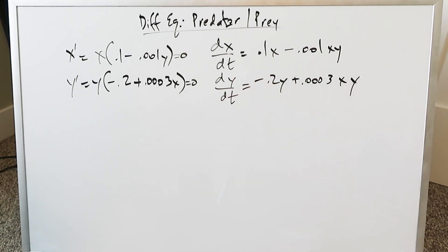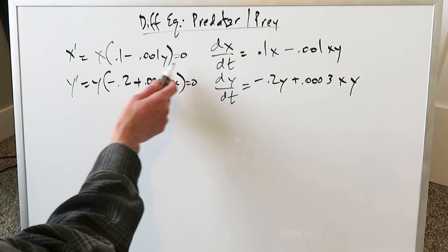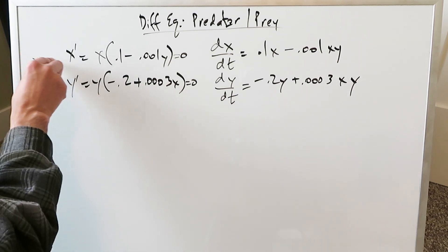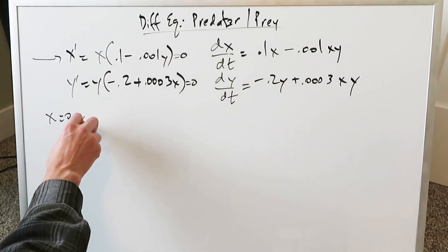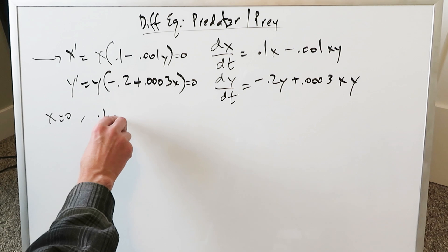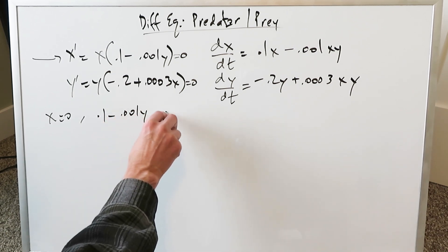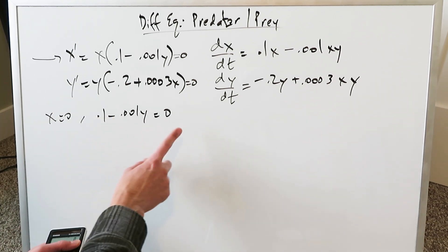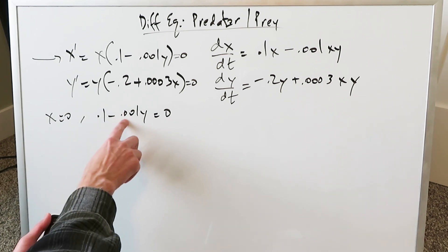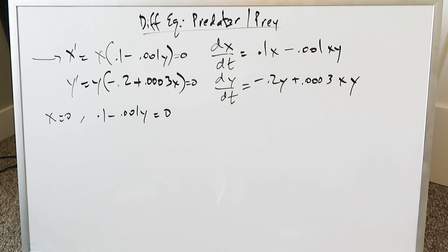Right now we're determining what x and y represent in terms of predator or prey. Normally for biological systems, predators are fewer in number and prey are more abundant. When looking at the top equation, x can equal 0, or you set 0.1 minus 0.001y equal to 0 and solve for y. That's simple algebra: take 0.1 to the other side, divide by 0.001, and you get y equals 100.